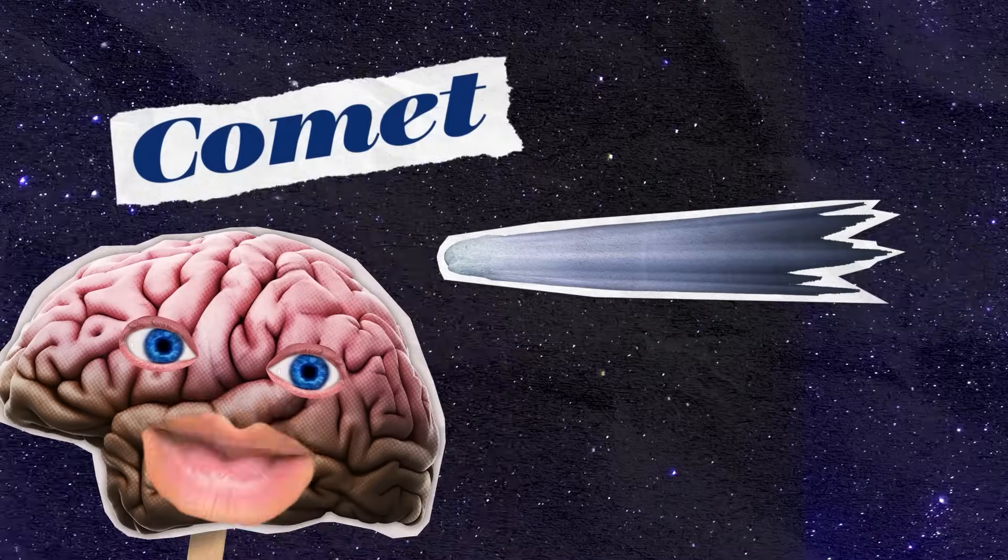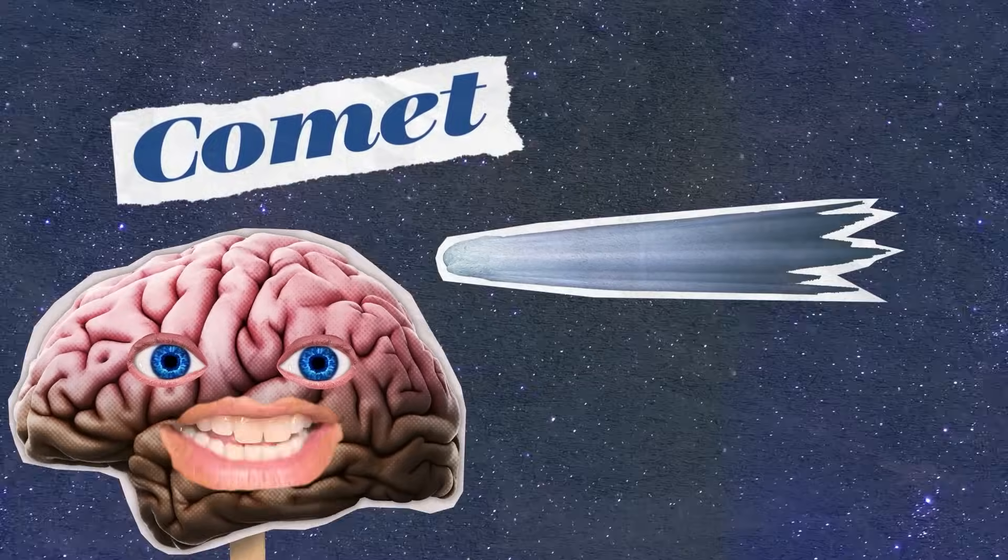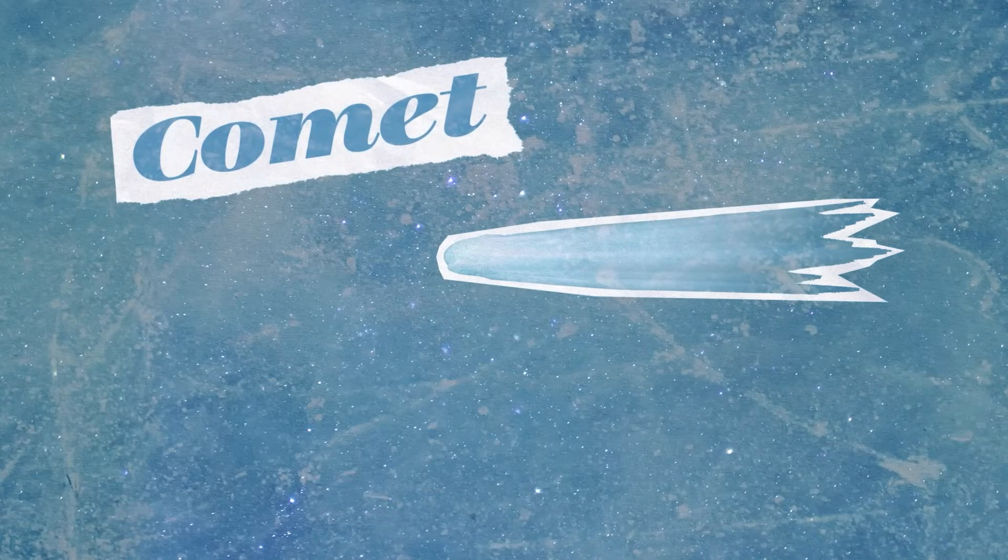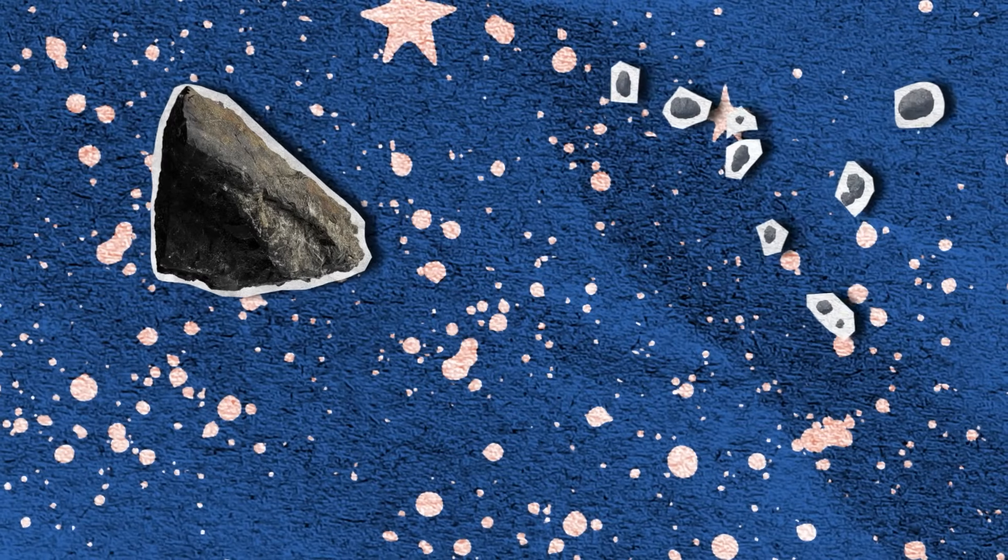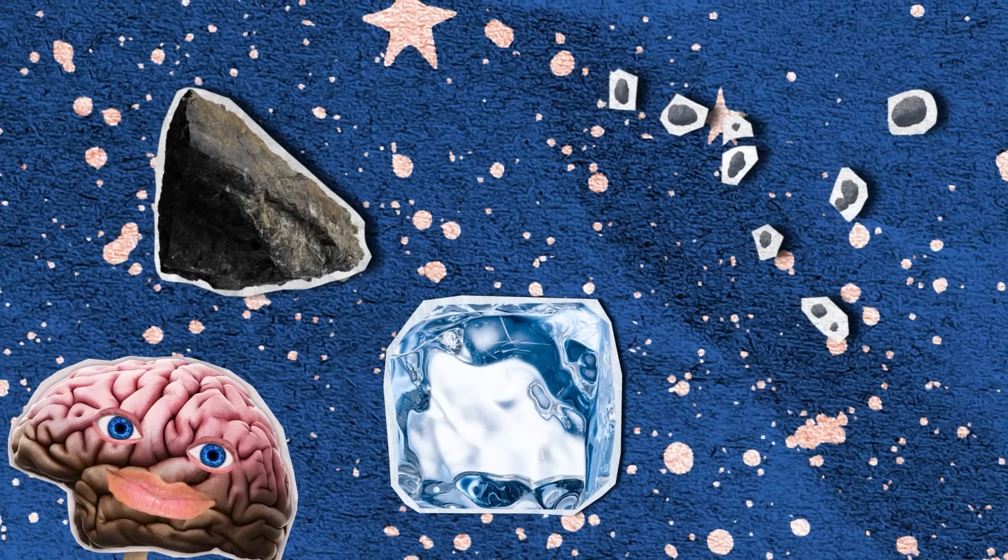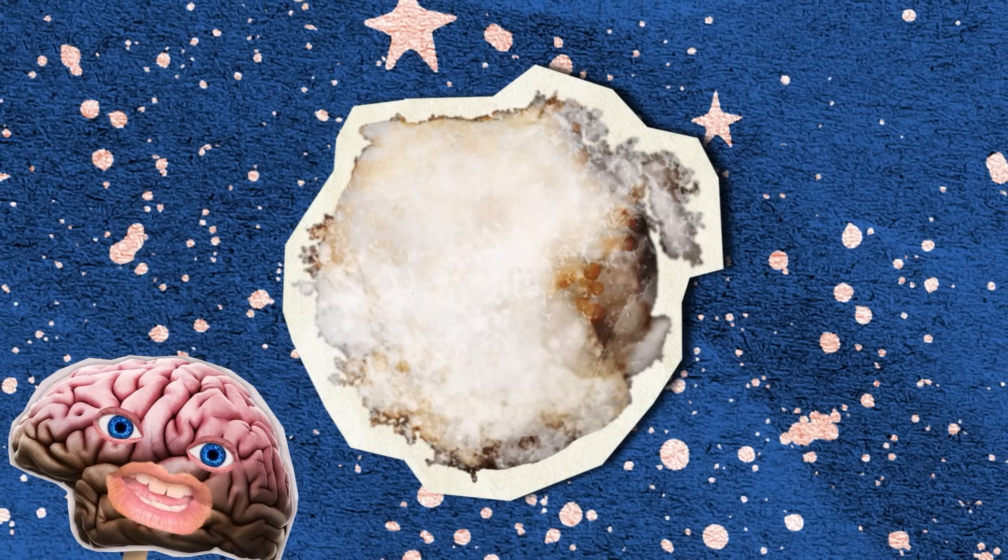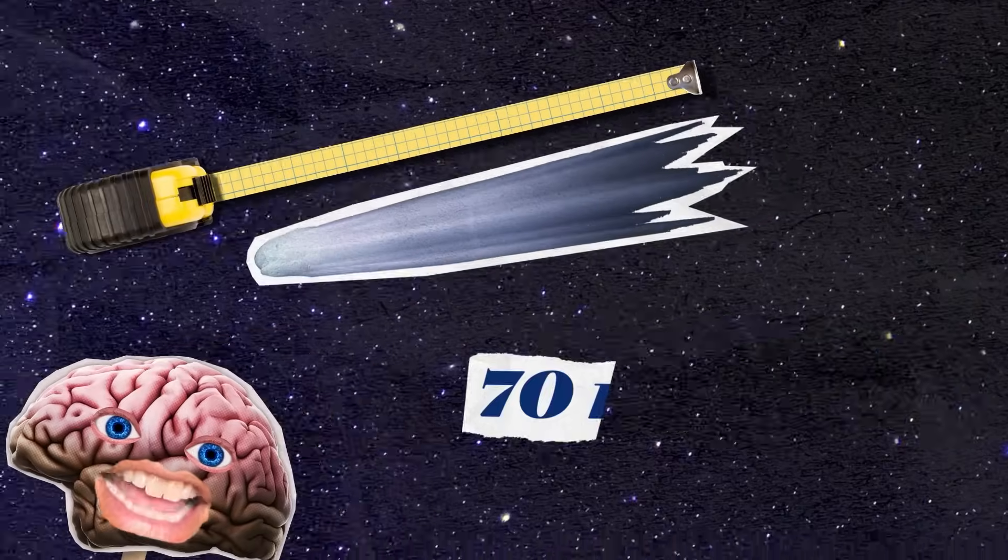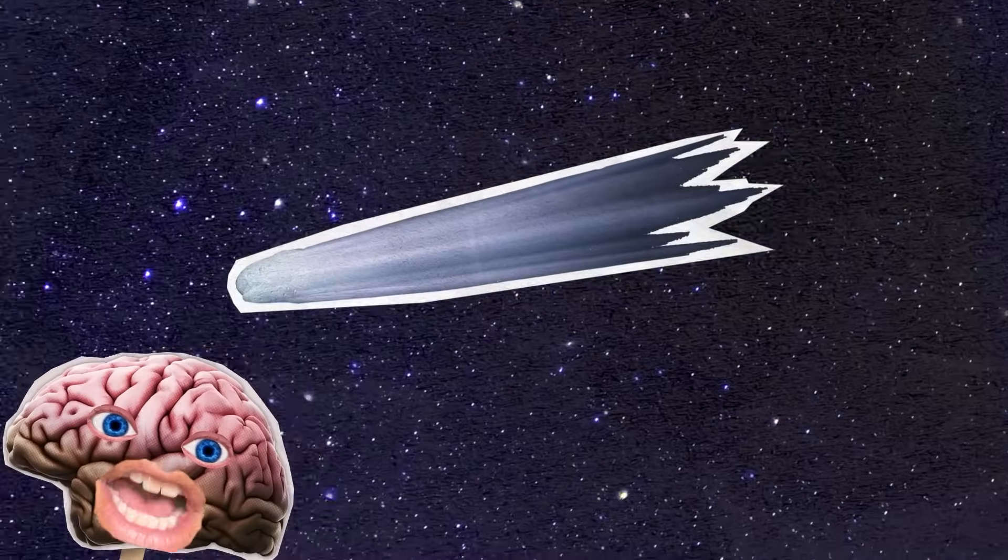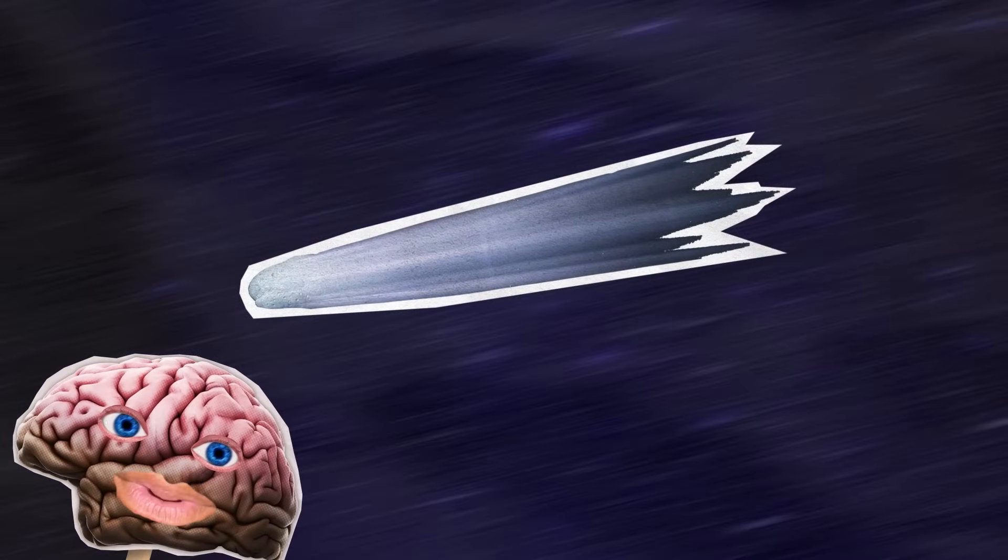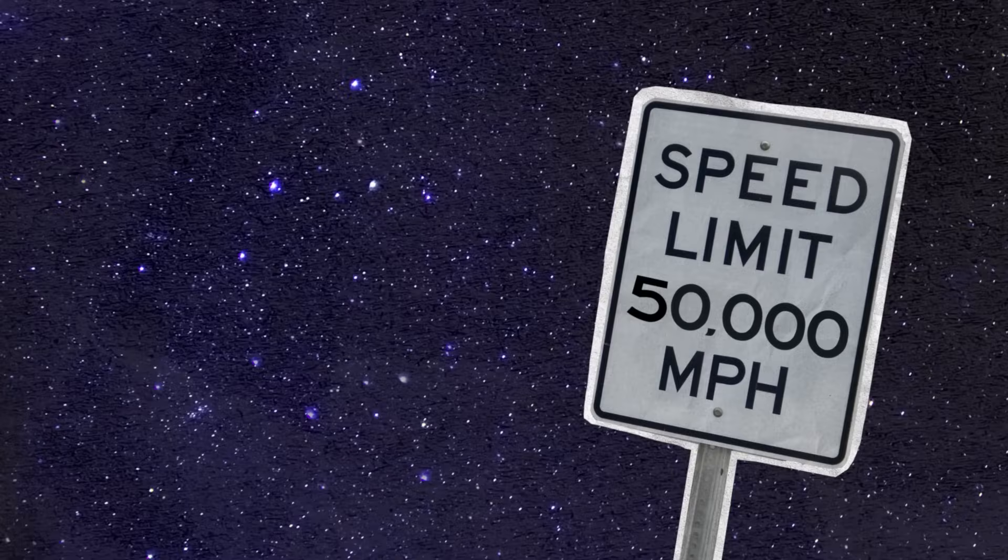And there are comets. Comets are very similar to asteroids, except comets are frozen. Comets are small chunks of dust, rocks, and ice that can best be described as dirty snowballs that orbit the sun. They range in size between 1 mile and 70 miles wide. And yet, comets and asteroids orbit the sun at super high speeds, like 50,000 miles per hour.